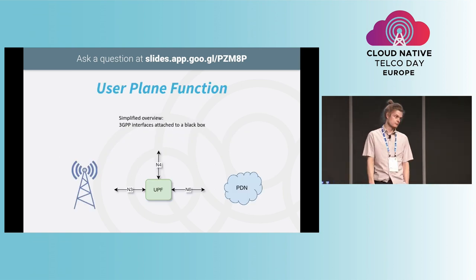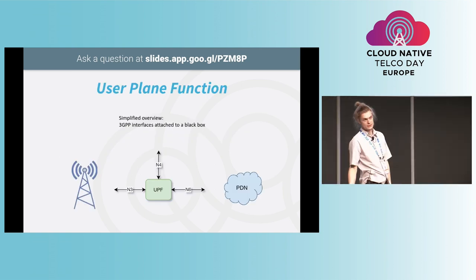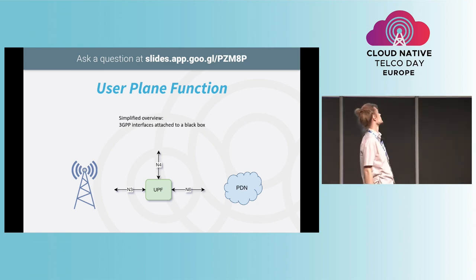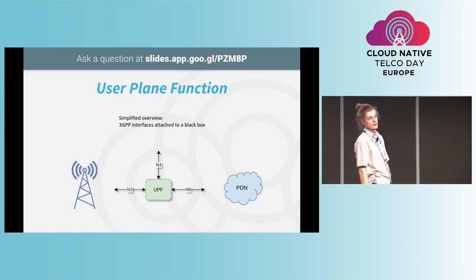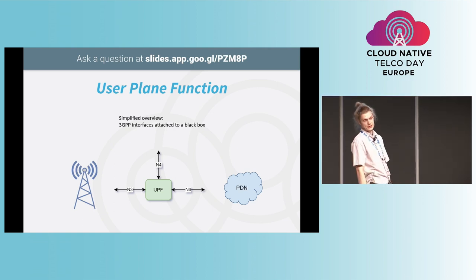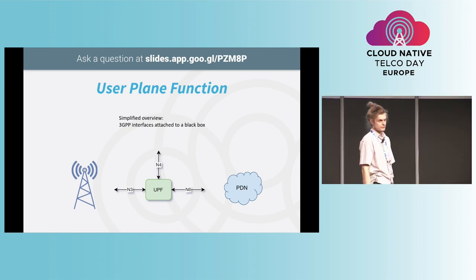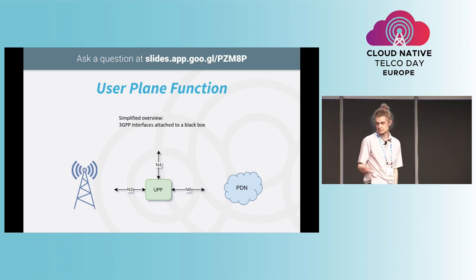So what is the UPF? It's a network function with three interfaces, 3GPP based. There's the N3 for the RAN, N6 for the packet data network, and the control plane connection N4 to the SMF in the 5G core. It's very similar to the 4G core equivalent that we also have.